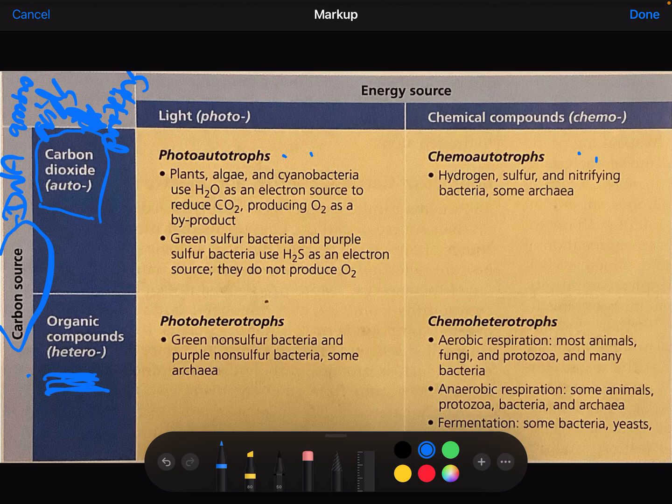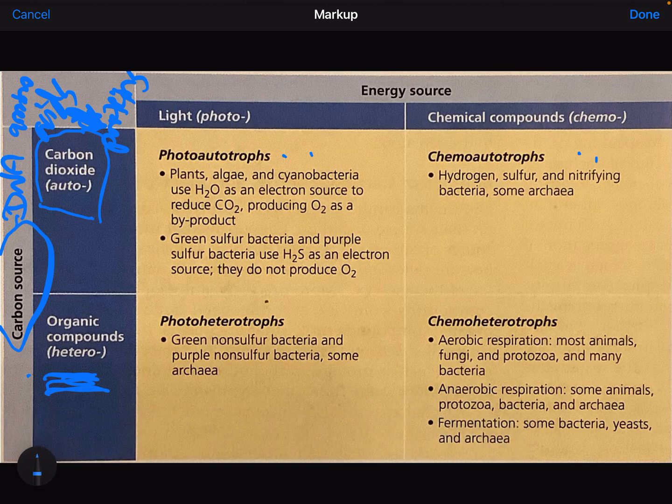Heterotrophs are organisms like all animals that consume other organisms or some sort of carbon containing compounds from other organisms, which provide them with these carbon atoms, which they can then incorporate into their glucose, into their DNA and amino acids.